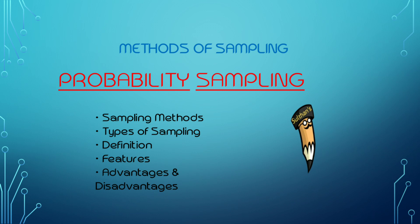What is the method of sampling? We will discuss the types of sampling. The two types of sampling are probability sampling and non-probability sampling. We will cover features, advantages, and disadvantages.